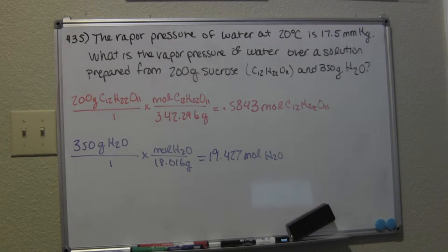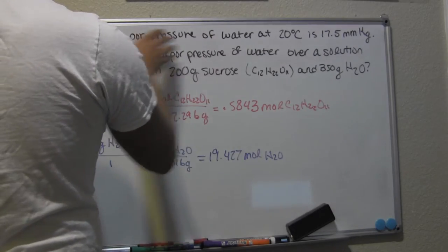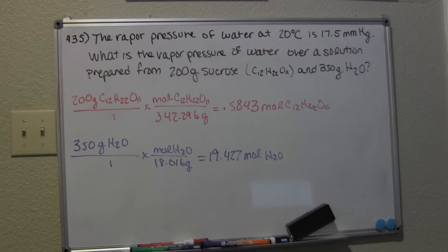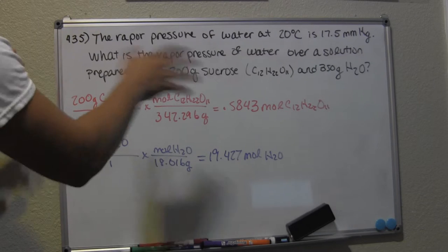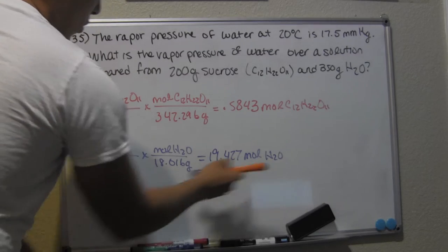In order to solve this problem, we need to find the mole fraction of water. The reason why we're doing that is because what we're comparing it to is the pure pressure of water at 20 degrees Celsius. If the given value were the pressure of pure sucrose, we would find the mole fraction of sucrose — but in this case it's giving us the pure pressure of water.